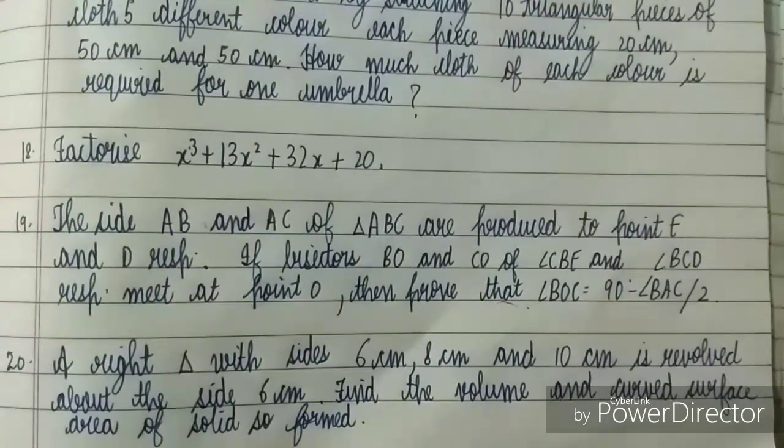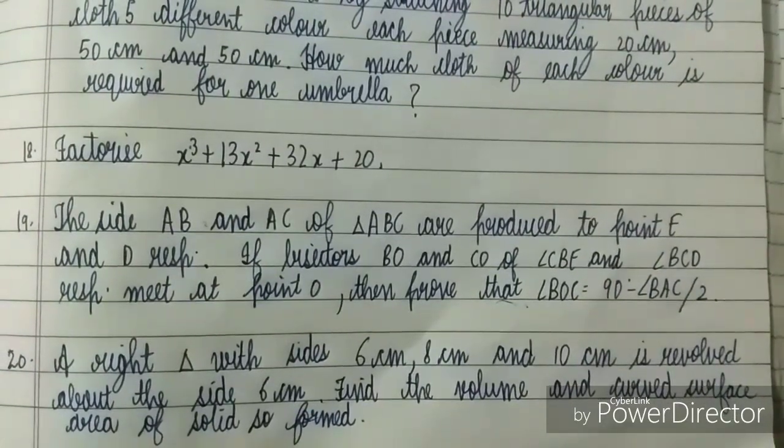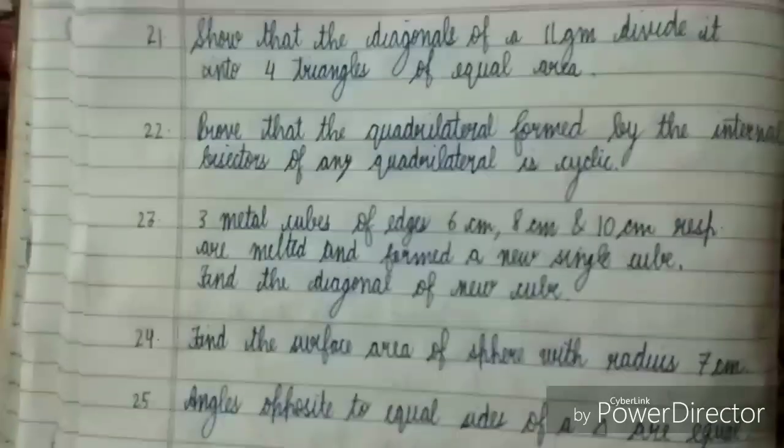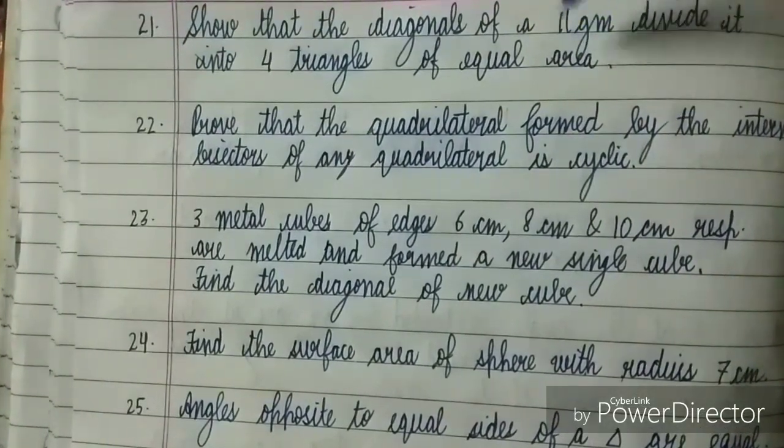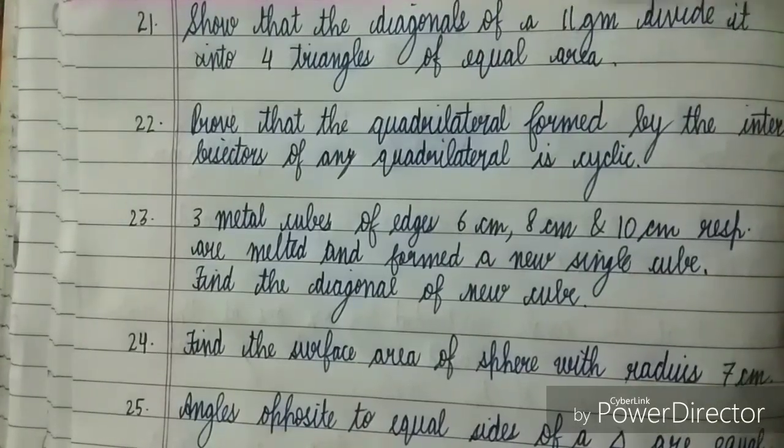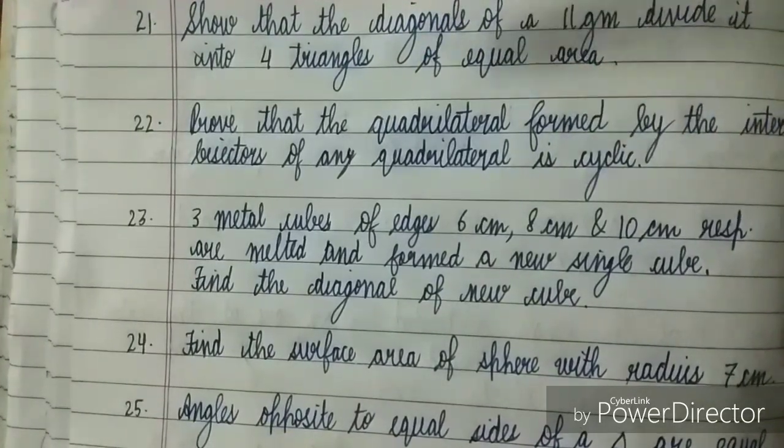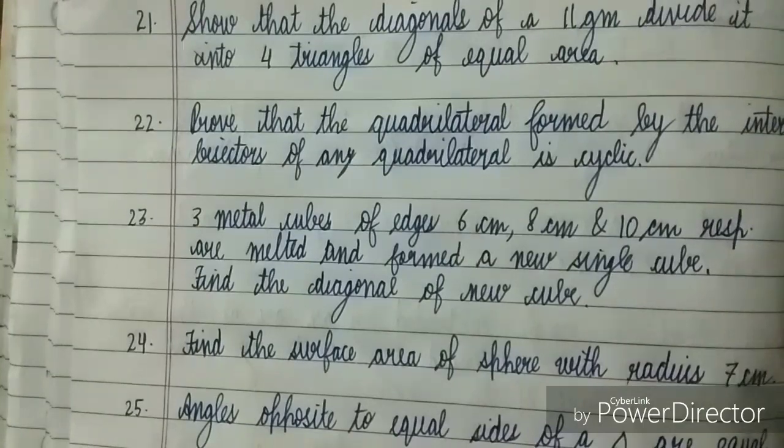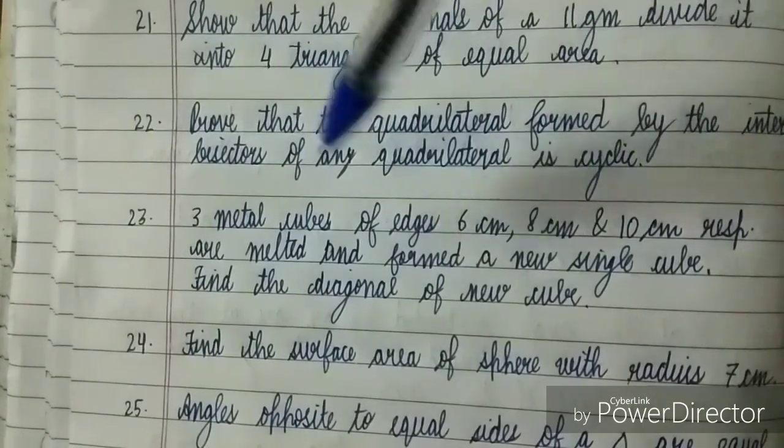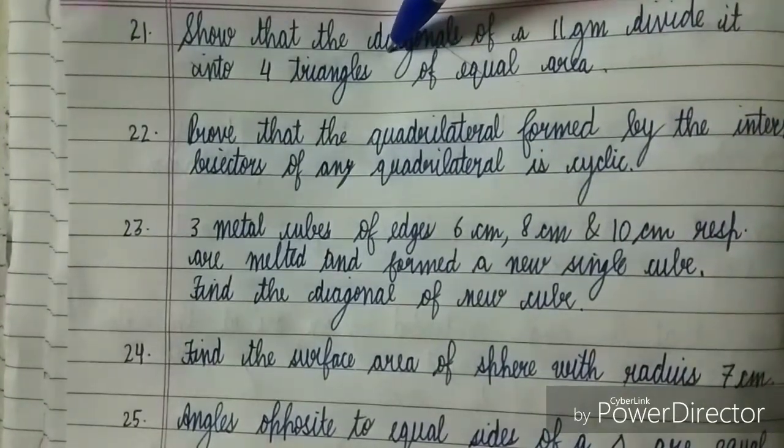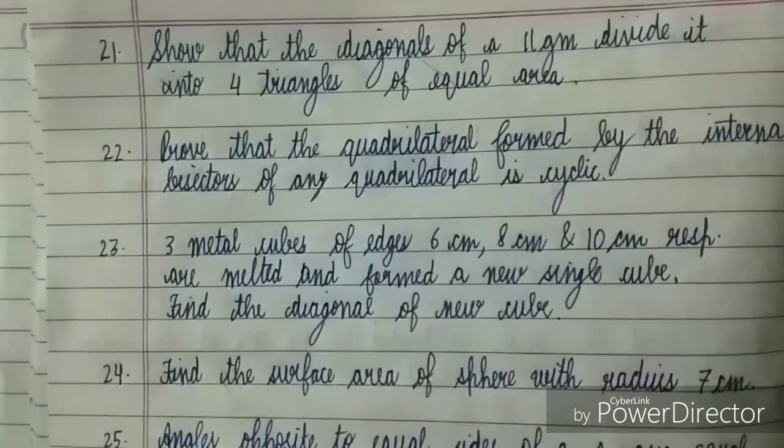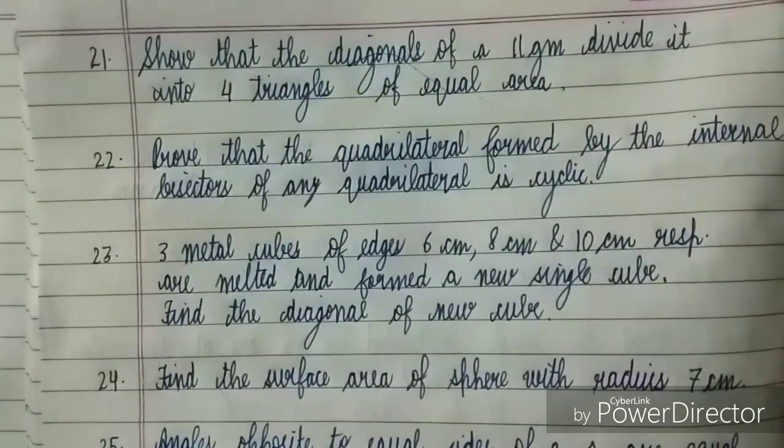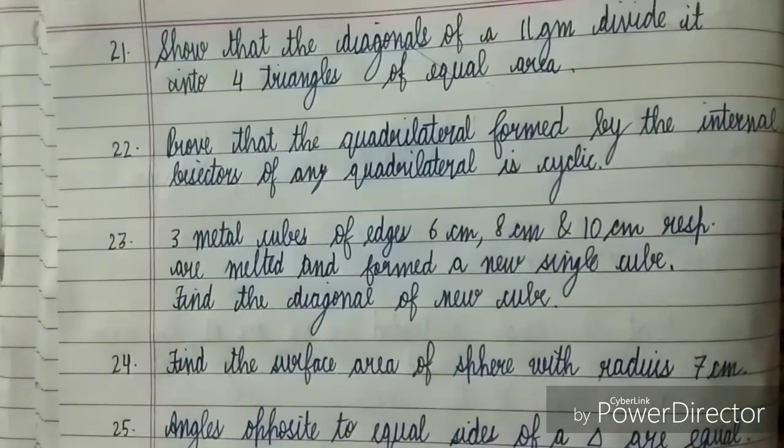Let's move to five more questions which are important and most common. Show that the diagonals of a parallelogram divide it into four triangles of equal area - present in the book itself, very easy question from chapter Quadrilaterals. Prove that the quadrilateral formed by the bisectors of any quadrilateral is cyclic - from examples of chapter Circles, very important example. Please do solve this question.